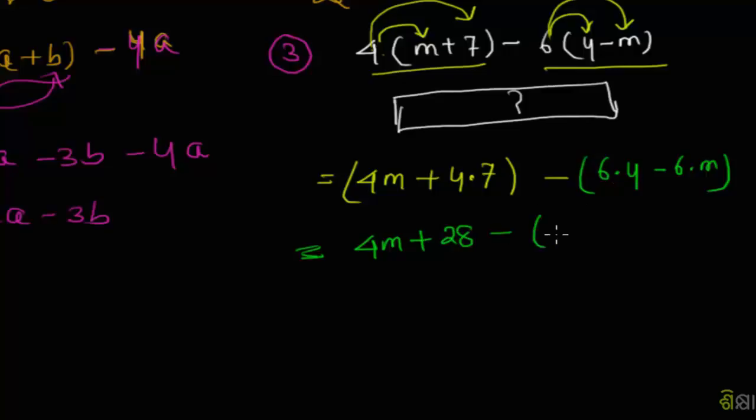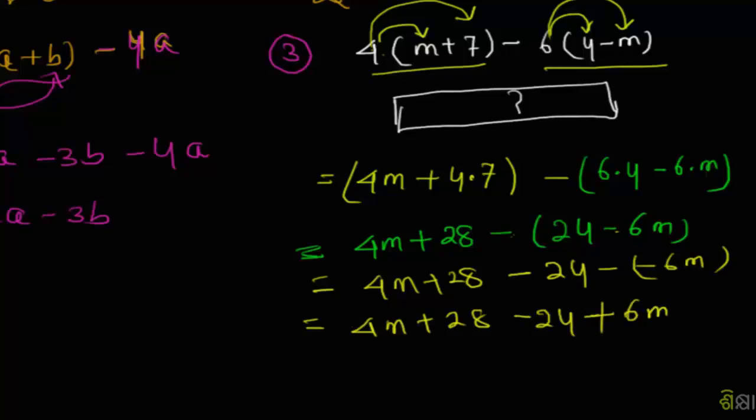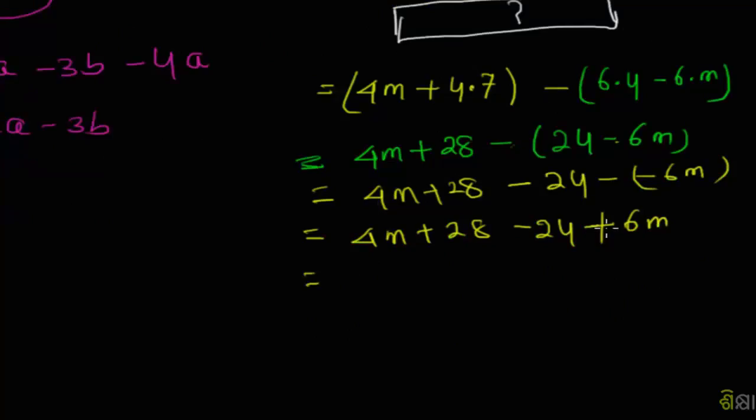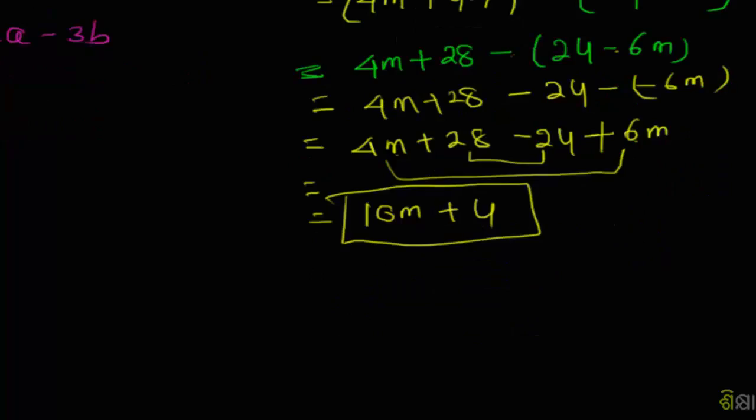We can now simplify: 4m + 28 minus 6m. Combining terms: 4m into 6m gives us 10m, plus 28 minus 24, which equals 10m plus 4.